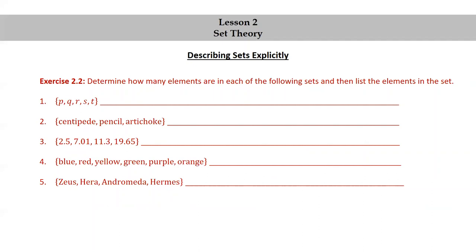Okay, first one. Set of P, Q, R, S, T has five elements: P, Q, R, S, and T. The set of centipede, pencil, artichoke has three elements: centipede, pencil, and artichoke.